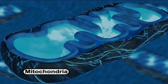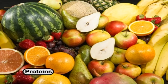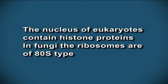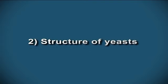Lipids are the main storage compounds in fungi and are placed in vacuoles. Mitochondria are the site of respiration. Endoplasmic reticulum is the site of protein synthesis. Golgi apparatus helps in import and export of proteins. The nucleus is relatively small and carries genetic material. The nucleus of eukaryotes contains histone proteins. In fungi, the ribosomes are of 80S type.